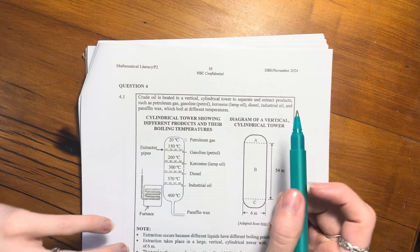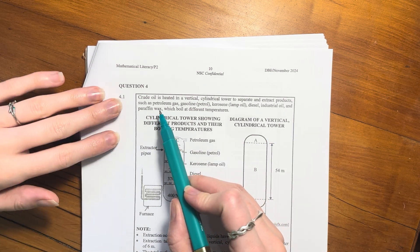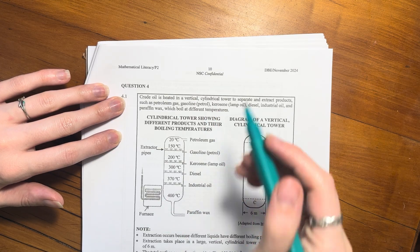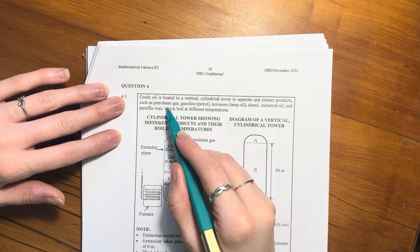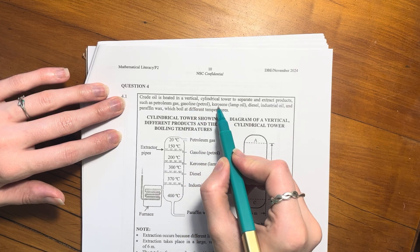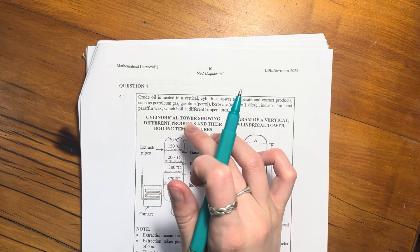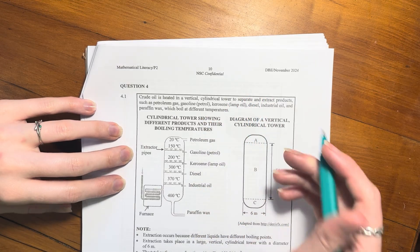Okay, let's look at question four. Question four says crude oil is heated in a vertical cylindrical tower to separate and extract products such as petroleum gas, gasoline, kerosene, diesel, industrial oil and paraffin wax, which boil at different temperatures.